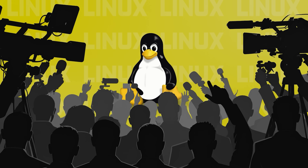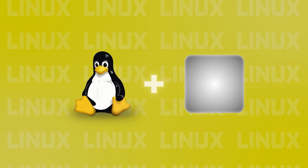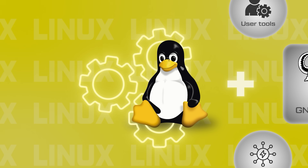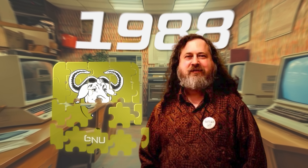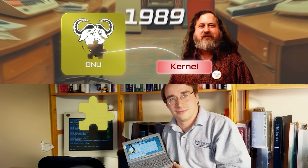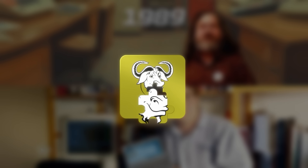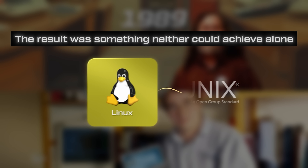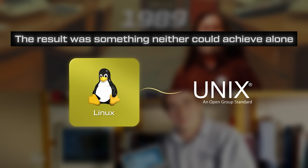By early 1992, Linux was gaining attention as a fast, free kernel. When combined with the user tools and utilities from the GNU project — like the compiler, shell, and libraries — it became a fully working operating system. Stallman's GNU had spent years building everything except the kernel, the part that talks directly to the hardware. Linux had written just that missing piece. His Linux kernel filled the gap GNU hadn't yet completed. The result was something neither could achieve alone: a fully free, Unix-like OS, built by two different people chasing different goals that happened to align at just the right time.